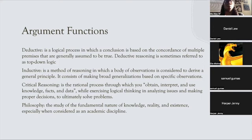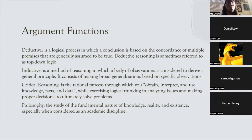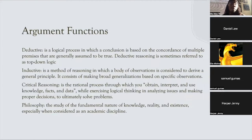Deductive arguments are a logical process in which a conclusion is based on the concordance of multiple premises that are generally assumed to be true. Deductive reasoning is sometimes referred to as top-down logic — you have general conclusions and look at how they have concordance with each other, building multiple premises and then a general conclusion about what's true.